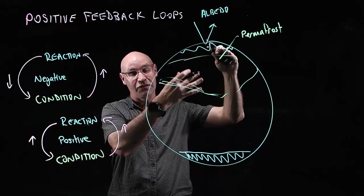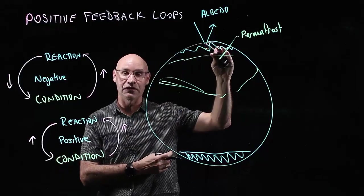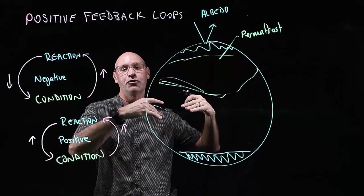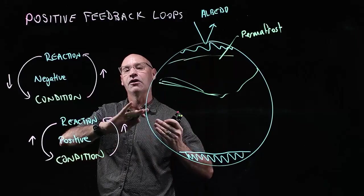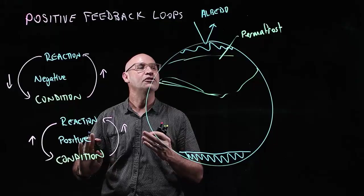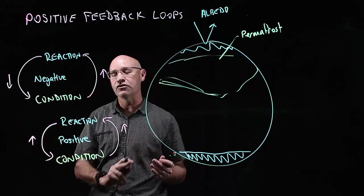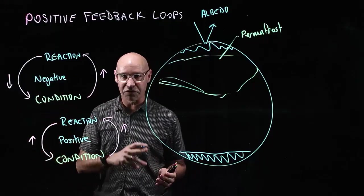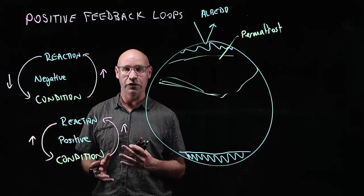There's less ice to reflect sunlight, so the Earth gets warmer, which melts more ice. It just continues on in this positive feedback loop and gets worse and worse.